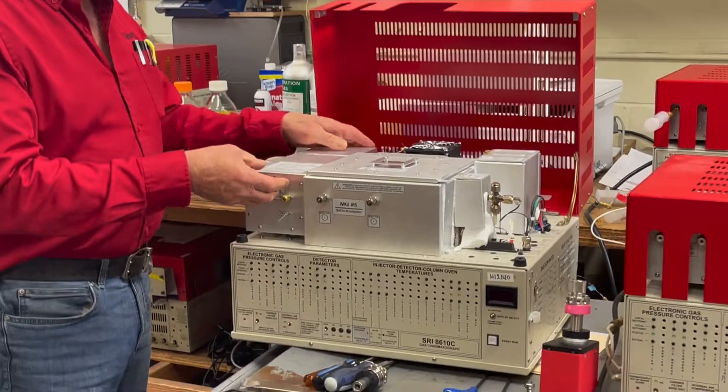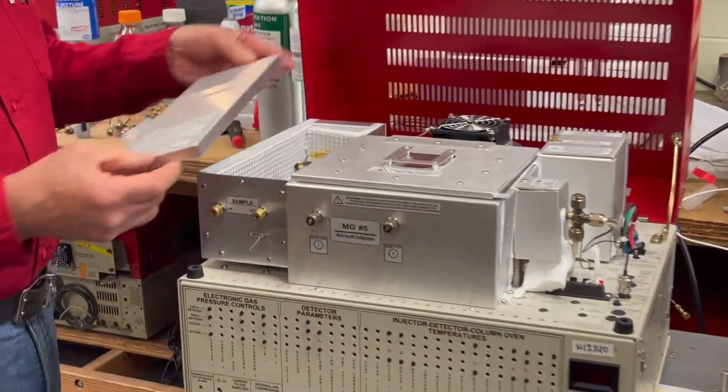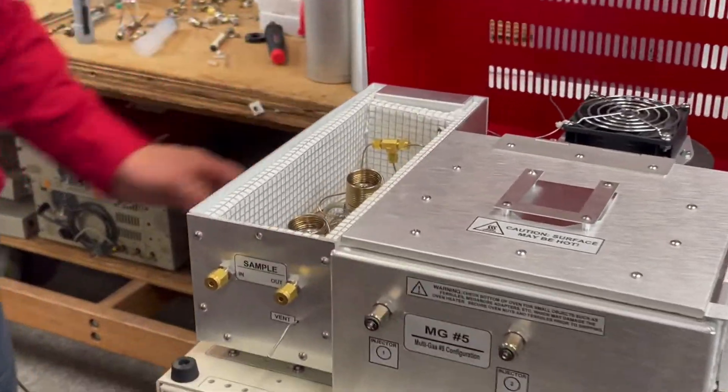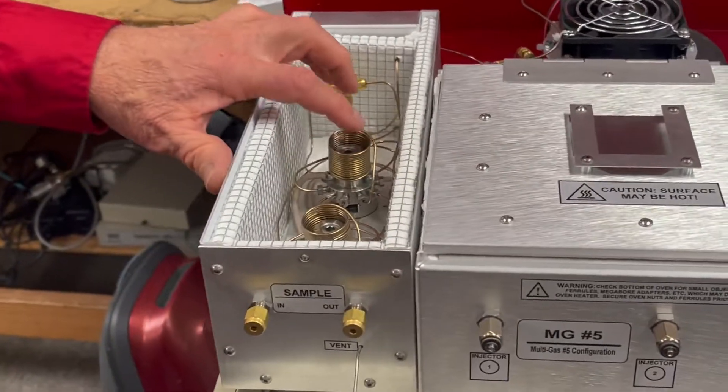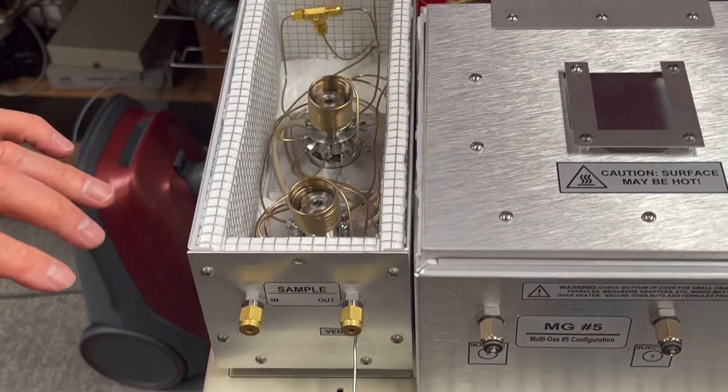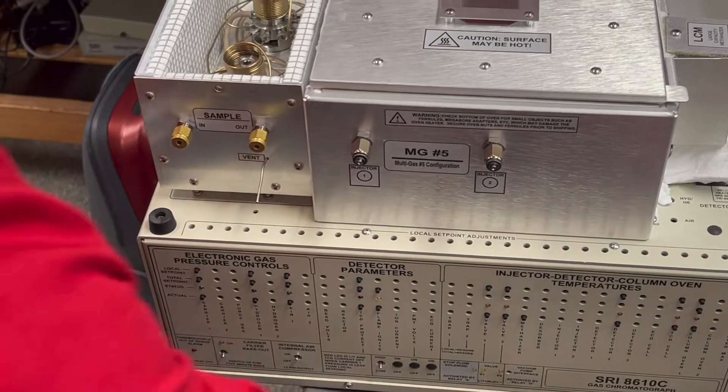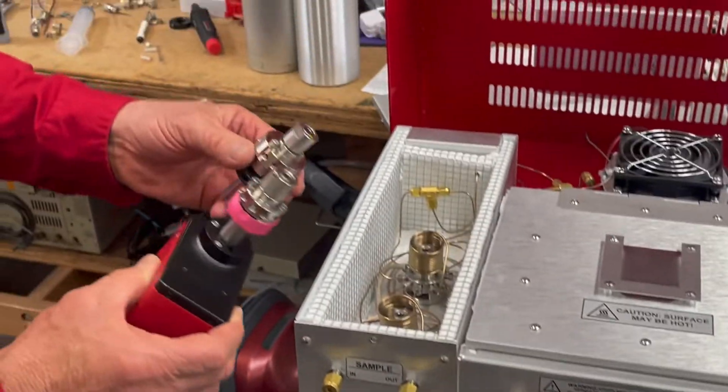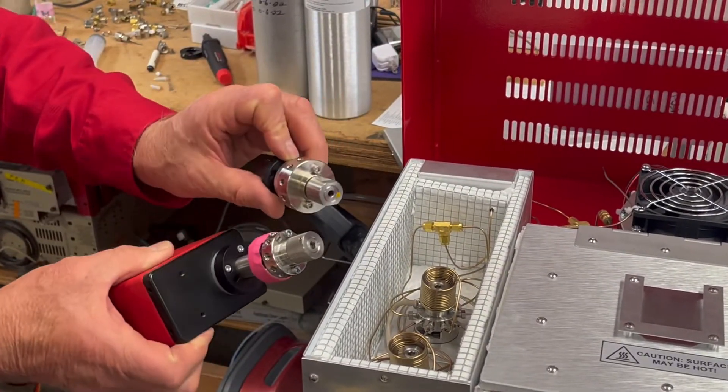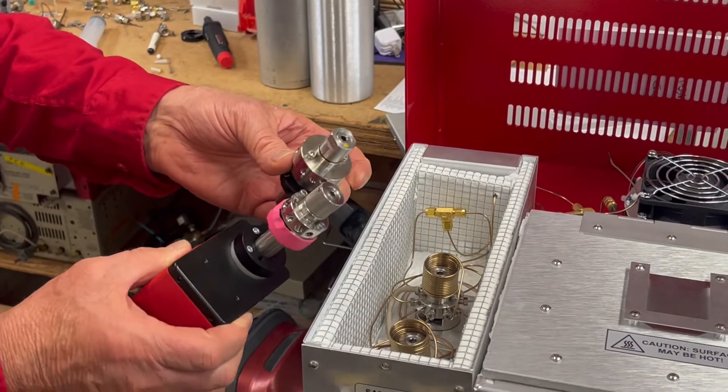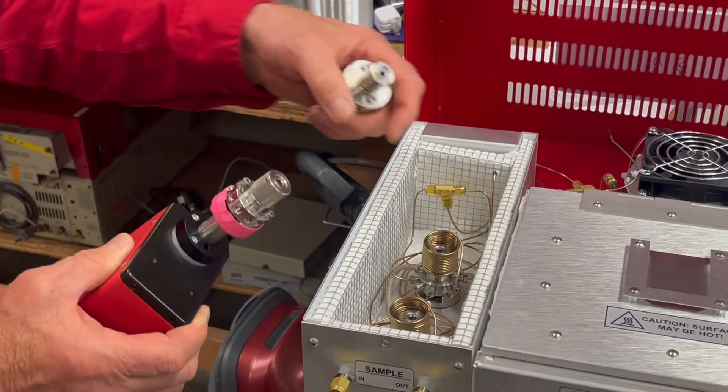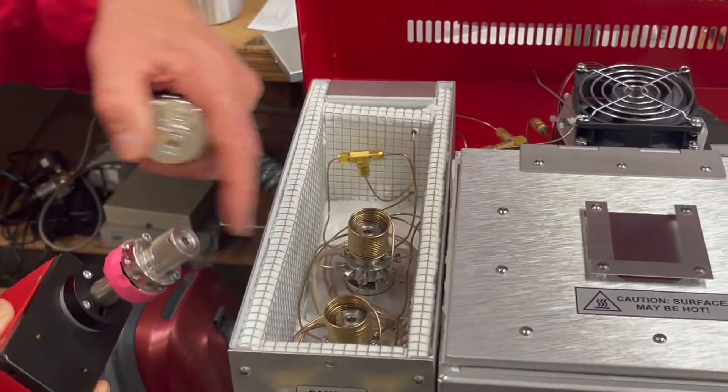The valves are located in this little box here. We call it a valve oven, and this particular GC has two valves in the valve oven. We make the GC with two different kinds of valves. They're very similar looking. These are called 10-port gas sampling valves, and there's 10 pieces of tubing connected to the 10 holes.